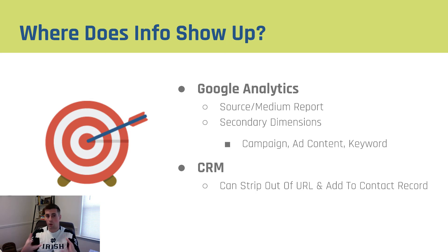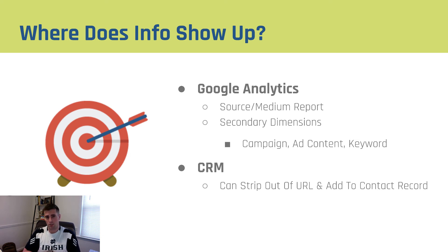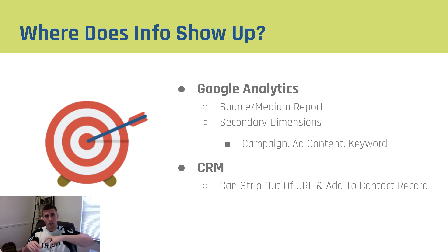So where does this information actually show up? In Google Analytics, you've got your source/medium report and secondary dimensions — you pull in source/medium and then look at campaign, ad content, or keyword to see the information that's pulled in and how it relates to your conversions or e-commerce metrics. In your CRM, you're going to have to strip these out of the URL and add them to your contact record, typically through hidden fields in your forms. If Google Analytics can read it, it'll pull it in automatically; if not, you pull it into your CRM using hidden fields.